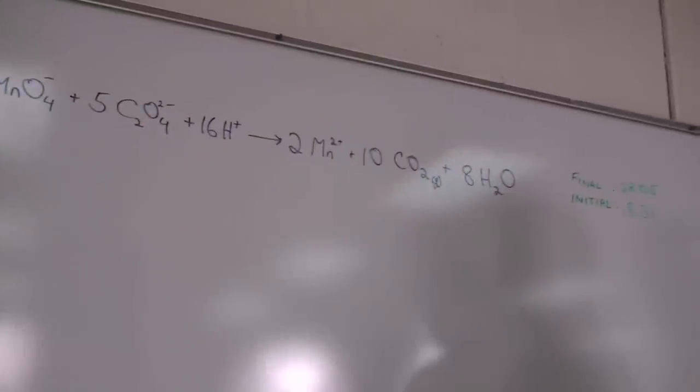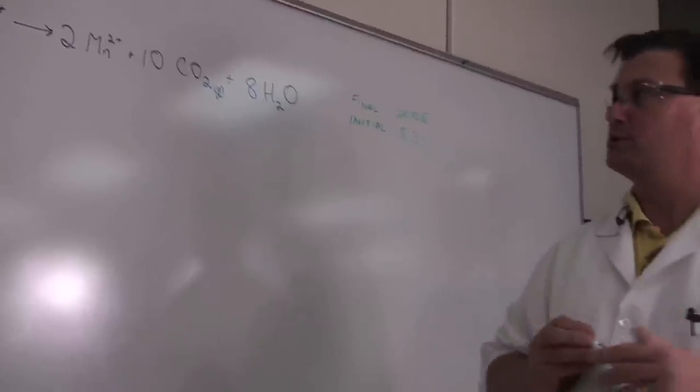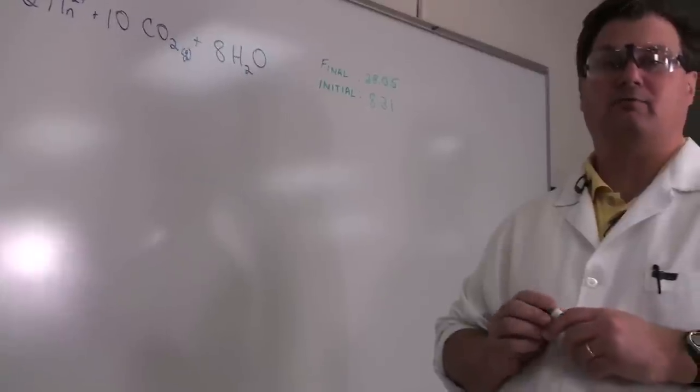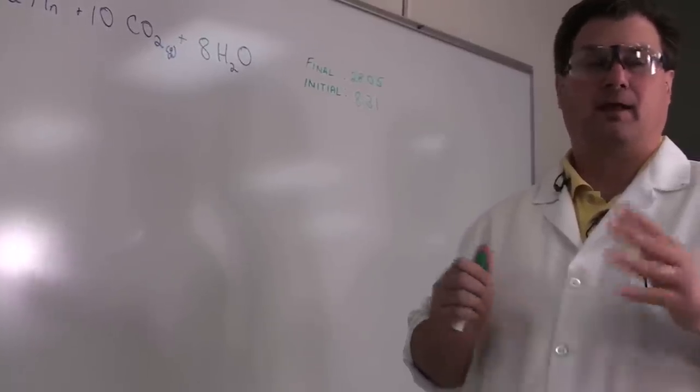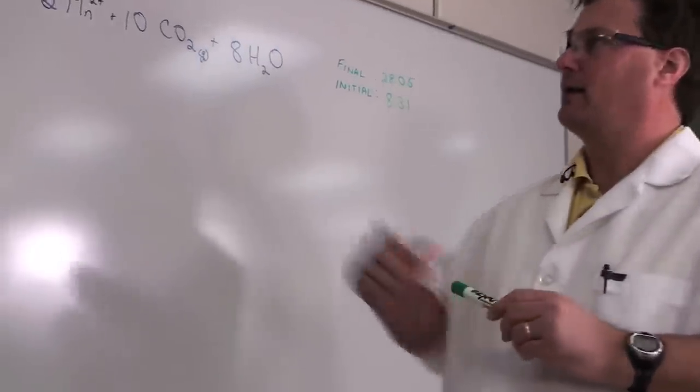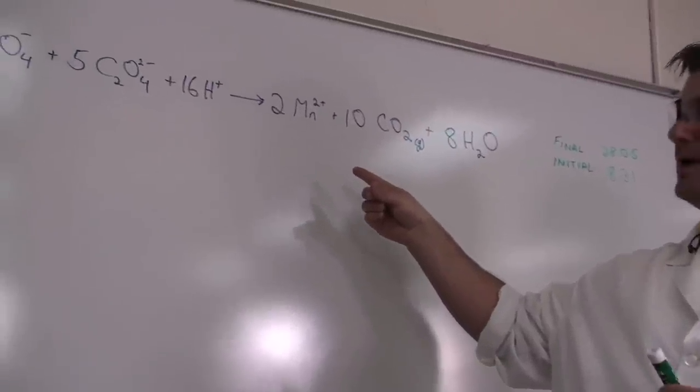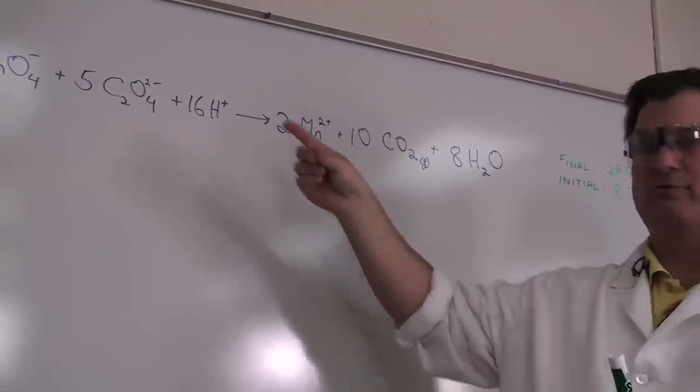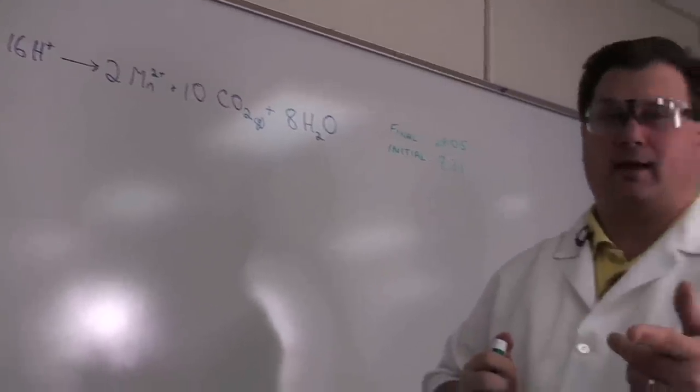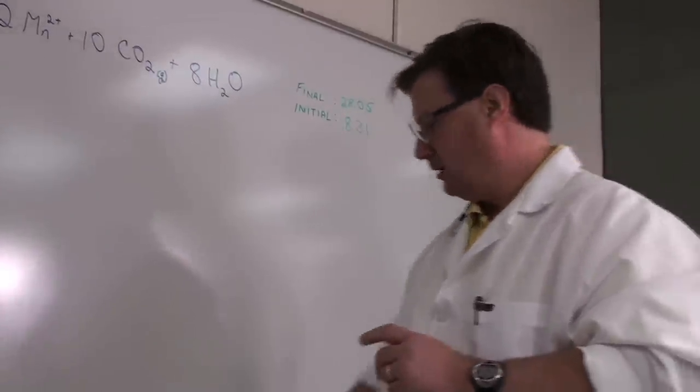So the first thing we need to do now—remember, a reaction occurs on a moles-to-moles basis. So our strategy here is to first calculate the number of moles of oxalate that were in the flask. Then, once we know that, based on the stoichiometry of the reaction, we can calculate the number of moles of permanganate that we added. And then because we've measured the volume of the permanganate, we can calculate its concentration. So the calculation goes something like this.